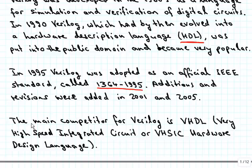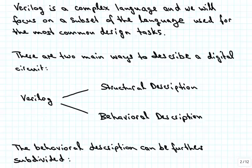As I just mentioned, the competitor for Verilog is VHDL, that stands for Very High Speed Integrated Circuit or VHSIC hardware design language. Verilog has evolved into a fairly complex language and it serves both the functional design, testing, verification, as well as the actual implementation. A number of things were added to it that over time made it fairly complex. We will focus on a subset of the language used for the most common design tasks, rather than verification tasks, for example.